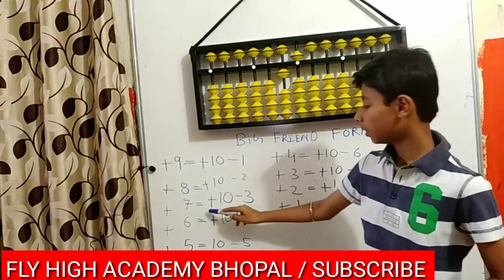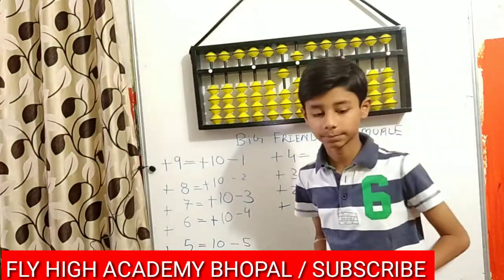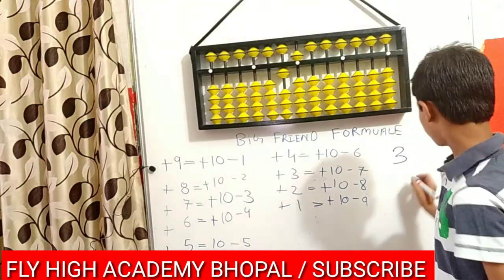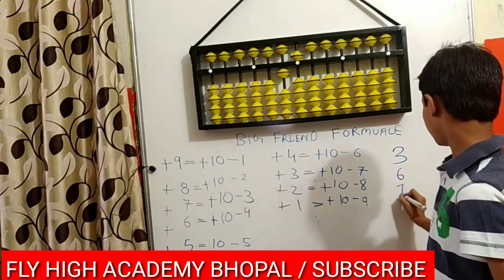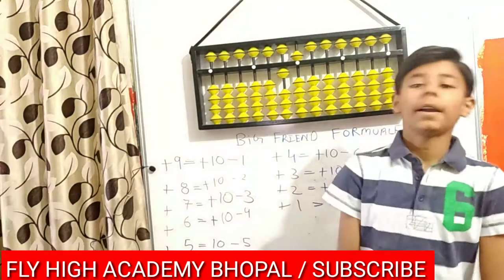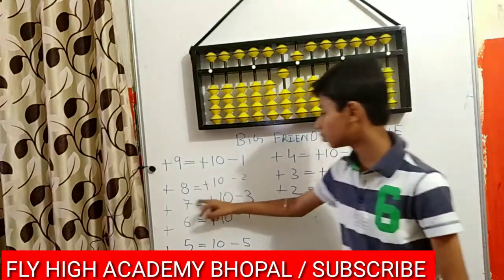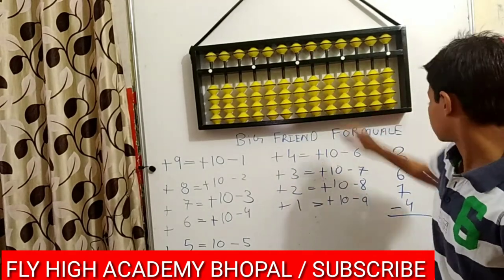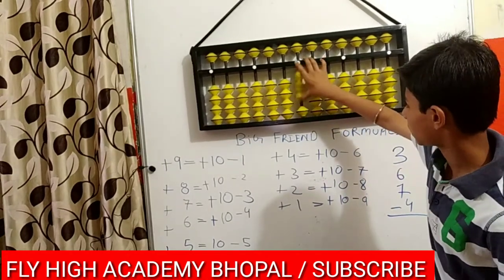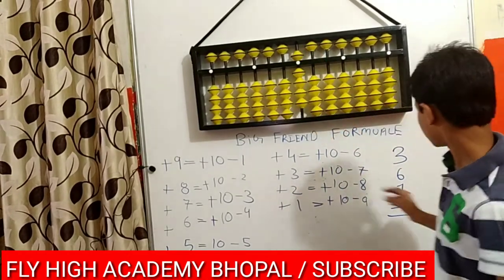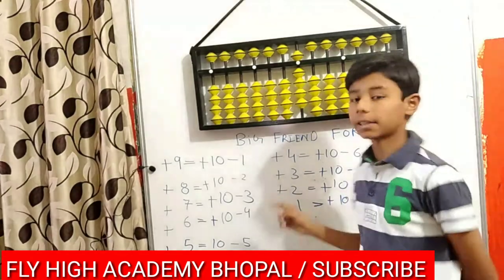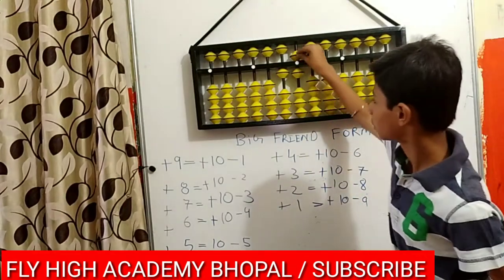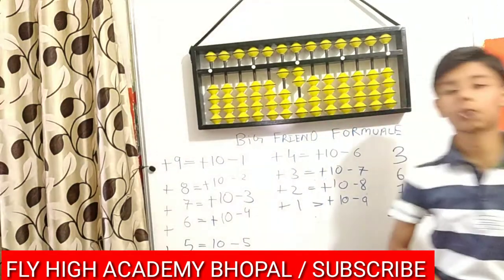Now the formula for plus 7 is equal to plus 10 minus 3. The question is plus 3, plus 8, and now plus 7. When it is written 7, we have to plus 10 and minus 3, so it will be plus 7. And now minus 4. So the answer is 12 for this sum.